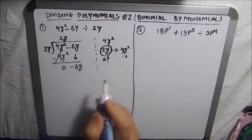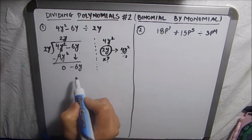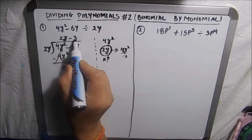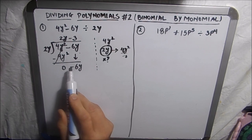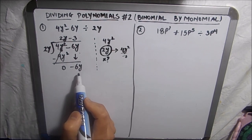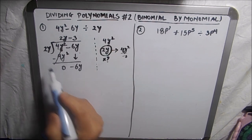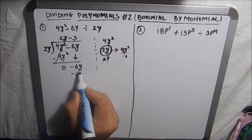Now we have to divide 6y by 2y. So 2y times 3 is 6y. So our next term will be 3, and as it is minus here we need negative 6y. So we will use minus 3 here to get minus 6y.